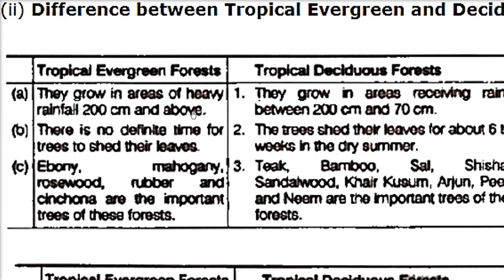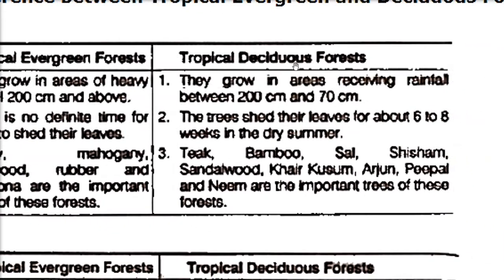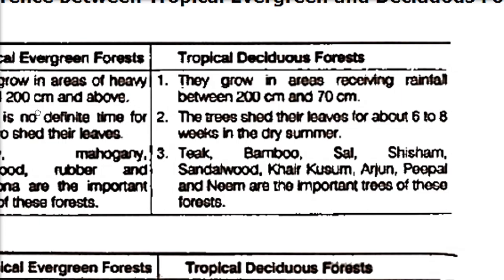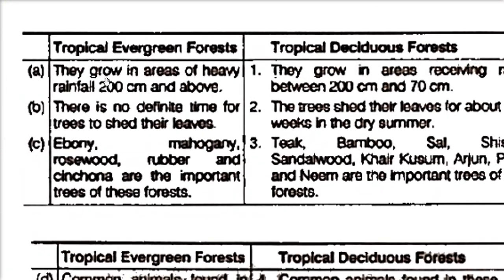Tropical evergreen forests grow in areas of heavy rainfall — 200 centimeters and above. Tropical deciduous forests receive around 70 to 200 centimeters of rainfall, and these forests are called tropical deciduous forests.